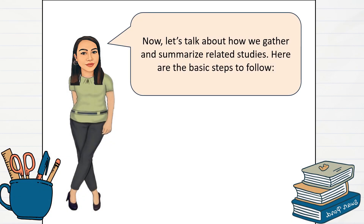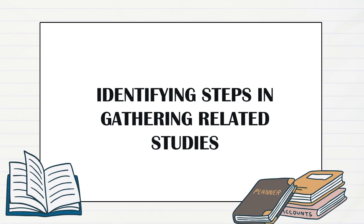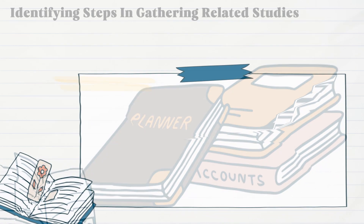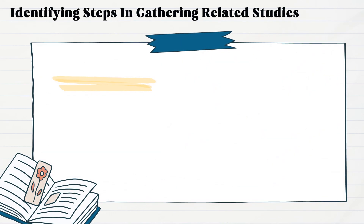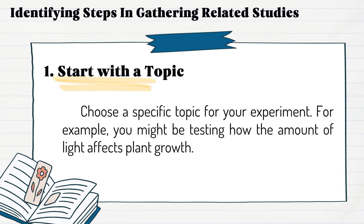Now let's talk about how we gather and summarize related studies. Here are the basic steps to follow. Step one: start with the topic. Choose a specific topic for your experiment. For example, you might be testing how the amount of light affects plant growth.